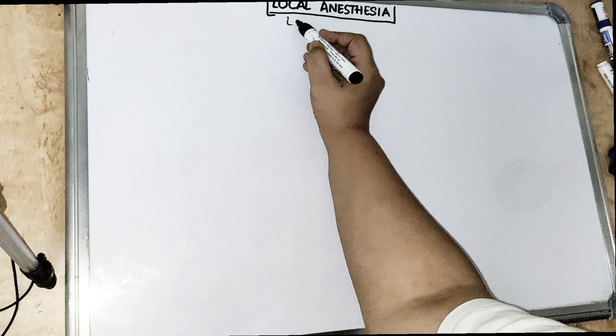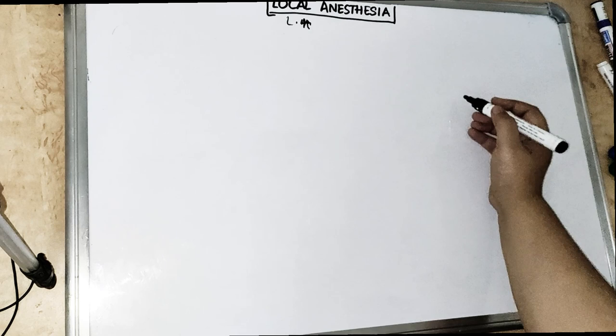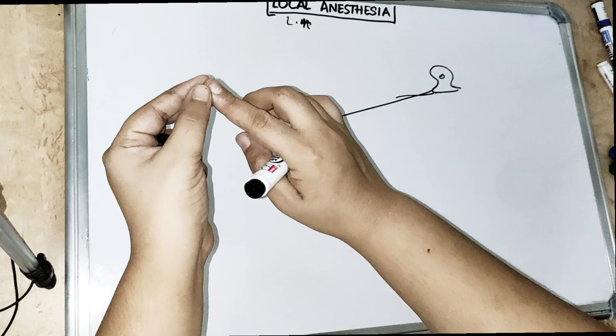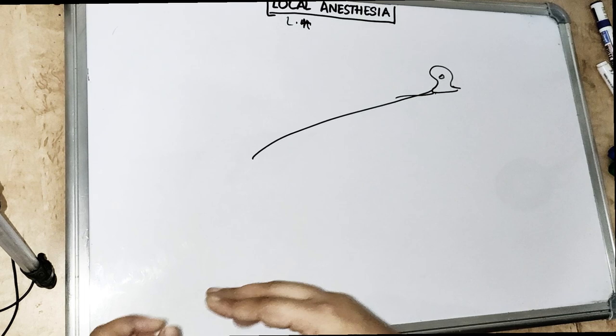Before talking about the mechanism of action of LA, we should be familiar with the action potential. What is action potential? This is the sensory neuron — the neuron which is taking impulses from the peripheries. Like if I feel hot, it will be taking impulses from here and going back to the central nervous system, telling the brain that I touched something hot or that I pricked something. So this is the stimulus which the sensory fibers give.